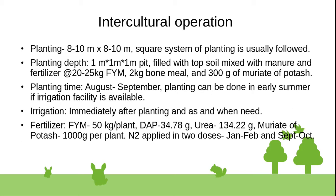Planting time is August to September. Planting can also be done in early summer if irrigation facility is available. Irrigation should be done immediately after planting. Lack of irrigation in summer can cause fruit cracking.